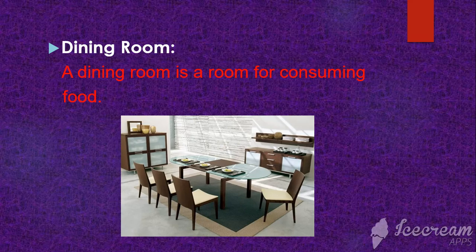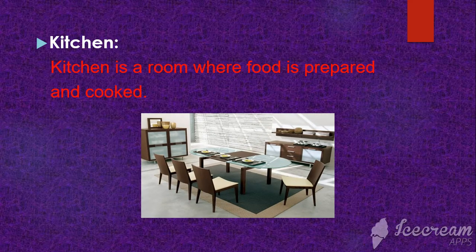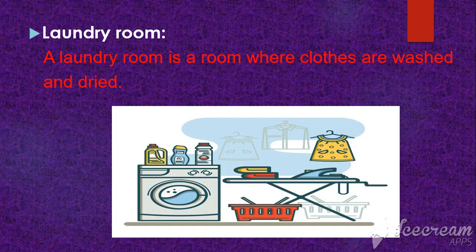Dining Room: a dining room is a room for consuming food. Kitchen: a kitchen is a room where food is prepared and cooked.